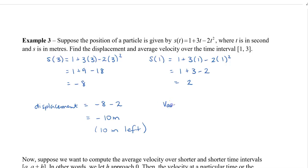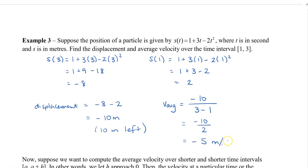To find the average velocity, recall that it equals displacement divided by change in time. The displacement is negative 10, divided by my change in time: 3 minus 1. So I get negative 10 divided by 2, giving an average velocity of negative 5 meters per second. This makes sense: negative 10 meters over 2 seconds is 5 meters per second going to the left.